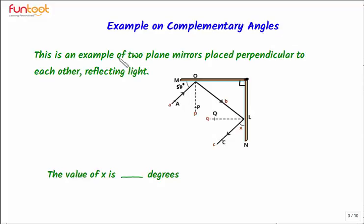Here is a real life example solved through the concept of complementary angles. This is an example of two plane mirrors placed perpendicular to each other reflecting light. We can see in the figure these are two plane mirrors kept perpendicular to each other and they are reflecting light. The value of x is how many degrees? In this question we need to find the value of x.